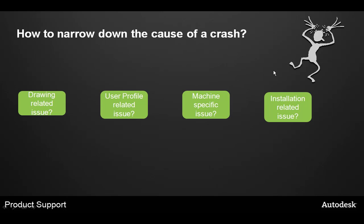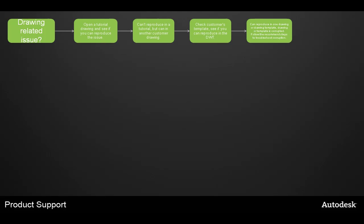When narrowing down causes of crashes, there are four major themes we check for: drawing related, user profile related, machine specific, or related to the installation. If it's a drawing-related issue, open a drawing that's part of the tutorial set installed with your product to see if you can reproduce the issue. If you cannot reproduce it in the tutorial data but can in a customer drawing, check the template of that drawing. If you can reproduce it in the drawing or drawing template, then that file is corrupted, and we'll troubleshoot those corruption steps.